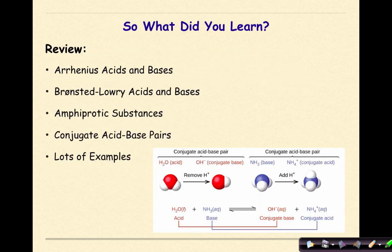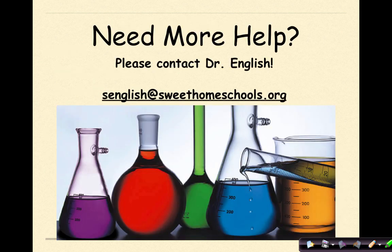So what did we go over? We went over the initial definition of Arrhenius acids and bases, Bronsted-Lowry acids and bases, amphiprotic substances, and conjugate acid-base pairs with many examples. Need more help? Feel free to contact me. Have a great day.